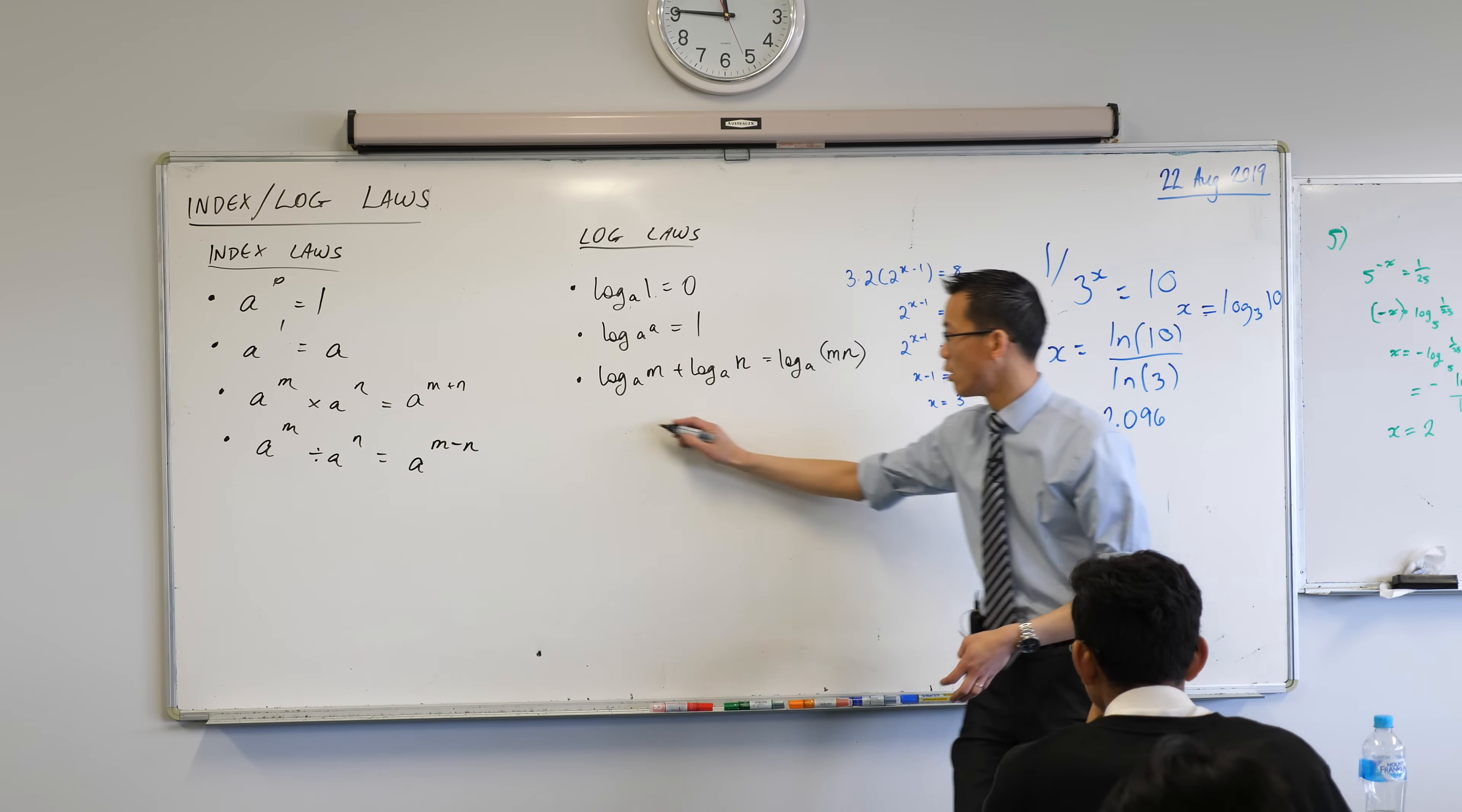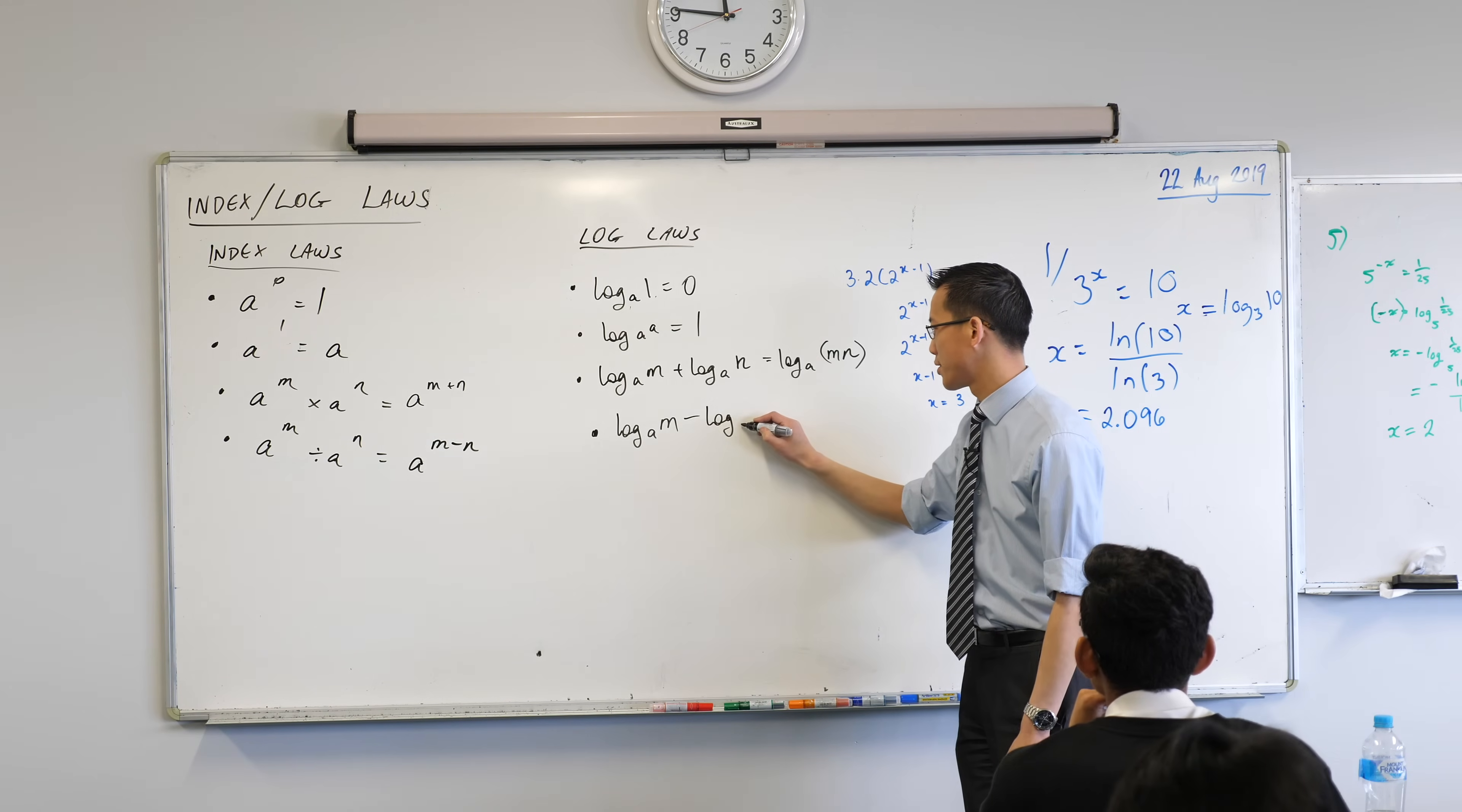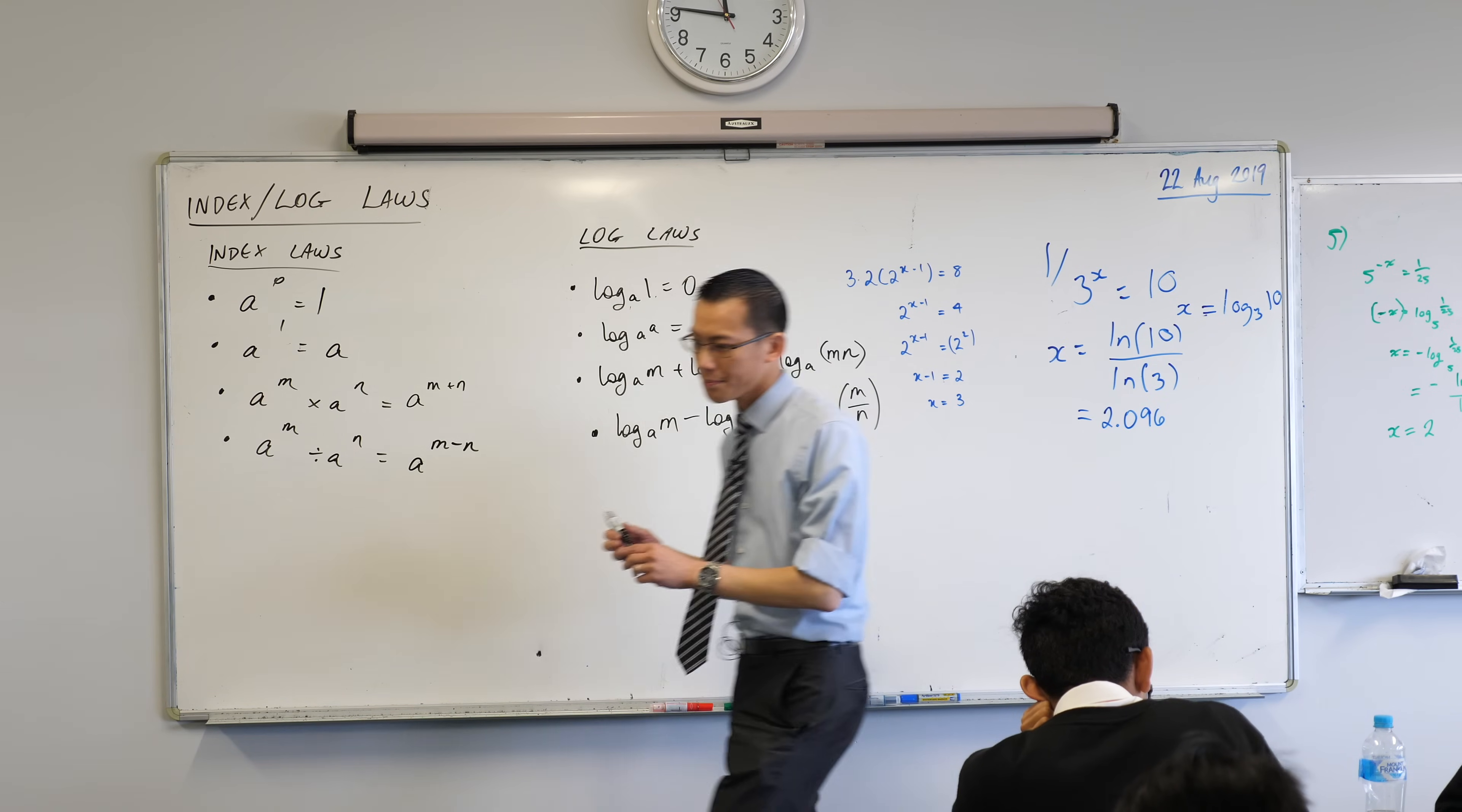Now come over to log land over here. Log base A of some number. And here, see how division turned into subtraction? Well here, subtraction is going to turn into division. So you can see here, here's my subtraction. And then what it turns into is M divided by N. So there's this division.